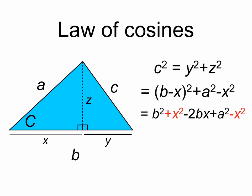And notice that the x² terms cancel leaving us with c² = a² + b² - 2bx.